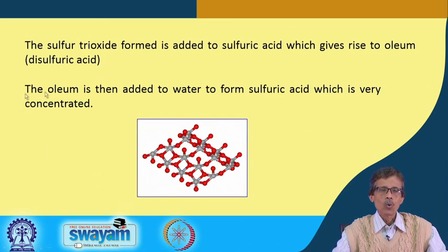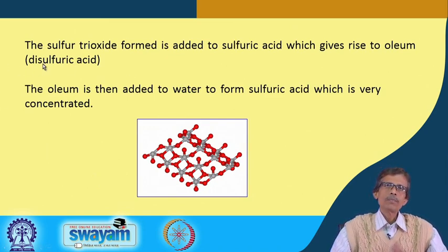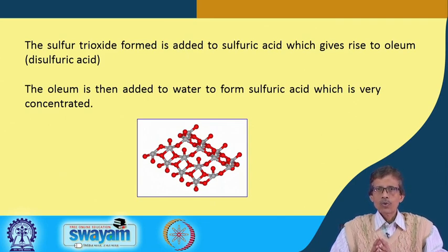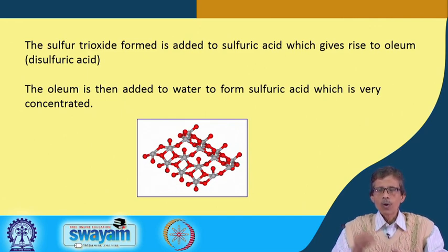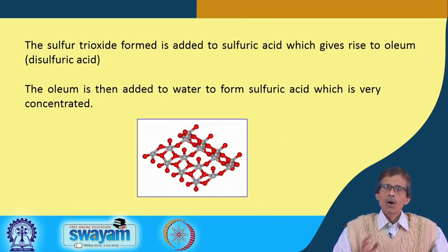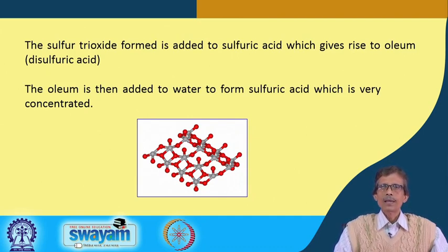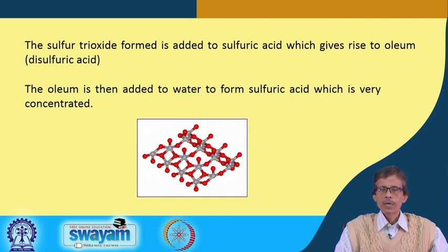H₂S₂O₇ is known as disulfuric acid. You simply take concentrated H₂SO₄ and add more sulfur trioxide to it. The system is supersaturated — there is no excess water molecule available to convert the remaining SO₃ to H₂SO₄, so it is trapped inside. The concentrated sulfuric acid containing excess SO₃ gives the formula H₂S₂O₇.